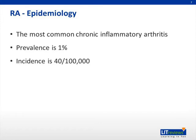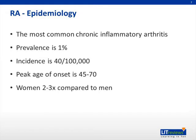The incidence, or the number of new cases, is approximately 40 per 100,000 persons per year. The peak age of onset is between 40 and 70 years old. Like many autoimmune and rheumatologic diseases, women are affected in greater numbers compared to men, at a rate of 2 to 3 to 1.